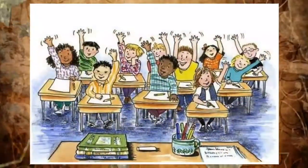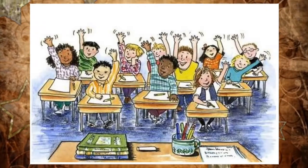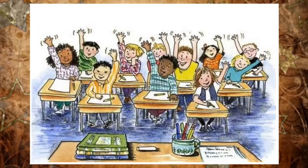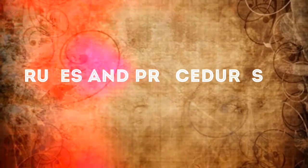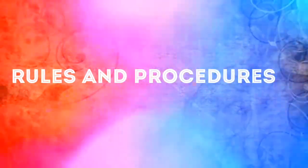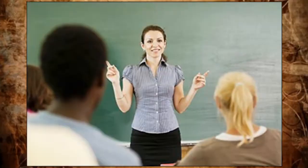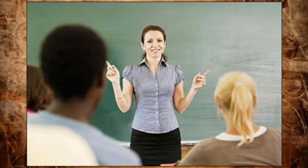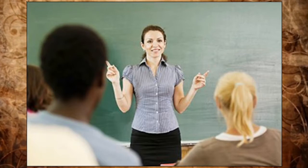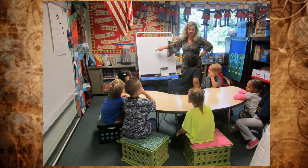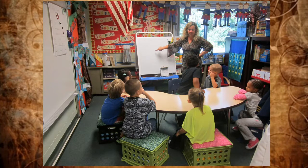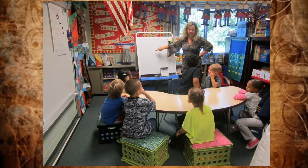The classroom climate that is conducive for learning is one that is not threatening yet business-like. It is a classroom where specific classroom rules and procedures are clear. These classroom rules and procedures are discussed on the first day of class. It is necessary for the students to know what is expected of them and what are the do's and don'ts inside the class.